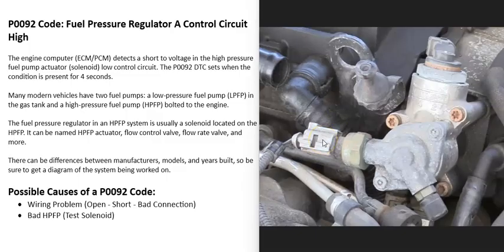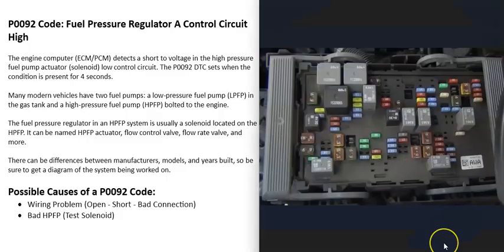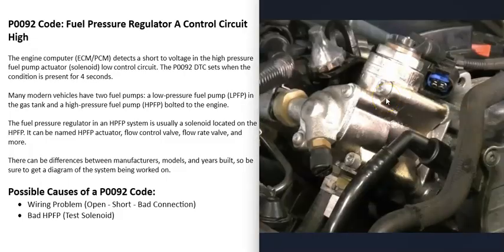You can also get wiring schematics for the vehicle and check the wiring - mainly the wiring harness going to that solenoid - and check to see if there's any open, short, or bad connection, because that's going to cause problems. It's also a good idea to check for any blown fuses and possibly a bad relay. If you're able to get wiring schematics for the vehicle, that'll tell you which fuse or relay it's using. The most common causes of a P0092 code are either a bad high pressure fuel pump - mainly that solenoid - or the wiring going to it.